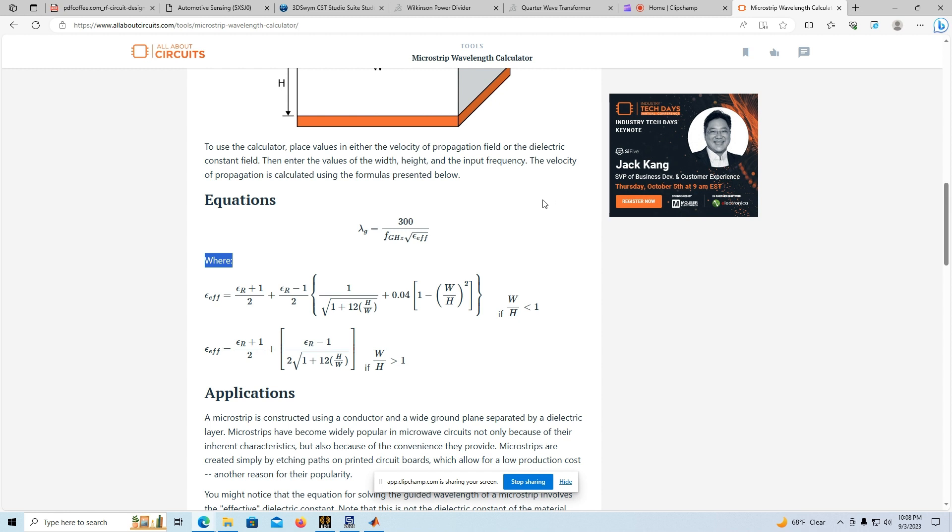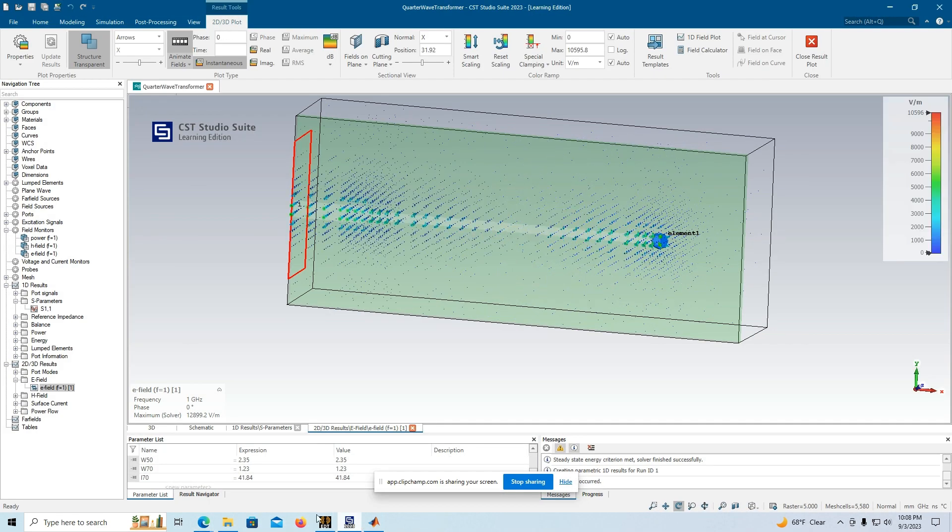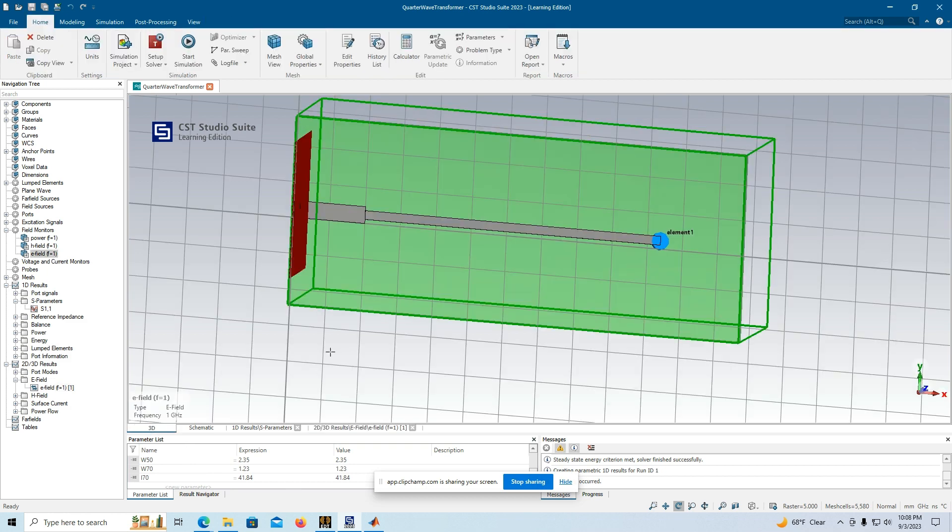Now, we did have a simulation done for the case of F equals 1 gigahertz, and we have this model here in CST, and this element one in blue is the 100 ohm load. This thinner, longer strip here is the quarter wavelength, and it is 41.84 millimeters long, and this thicker is the 50 ohm. It has a width of 2.35 millimeters.